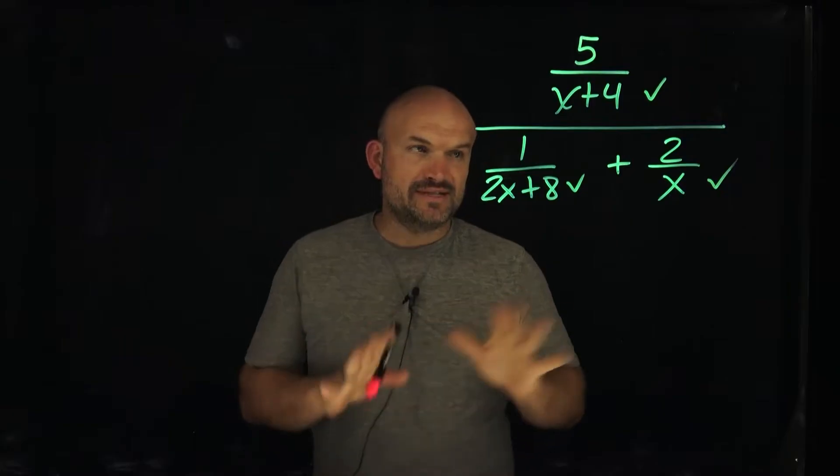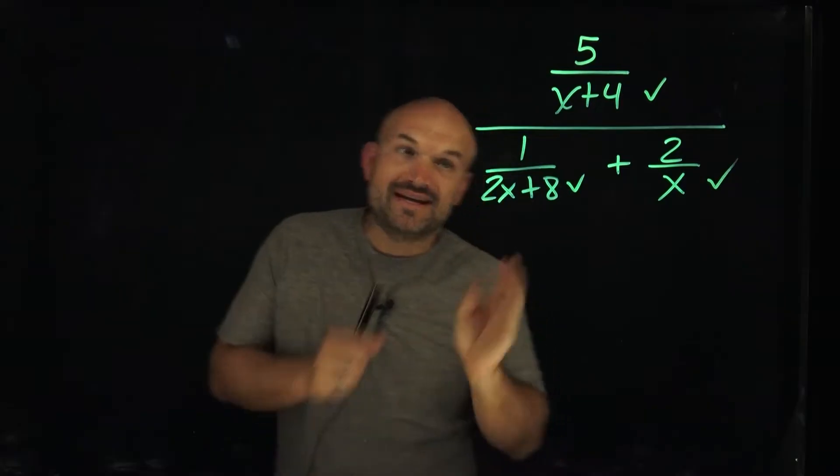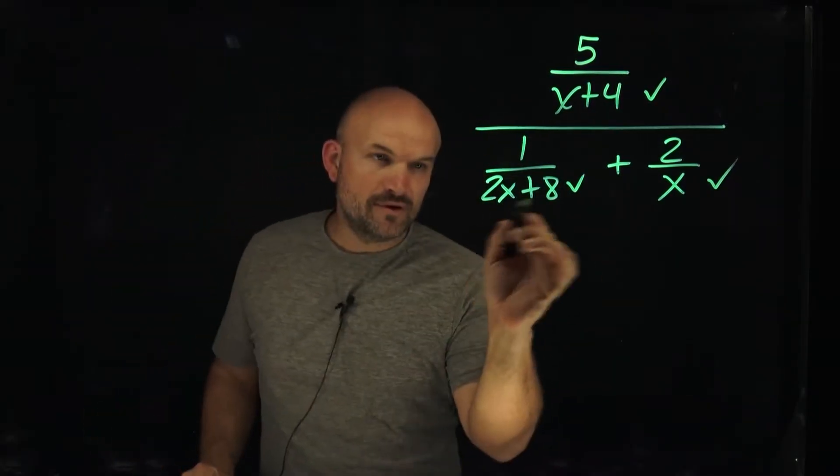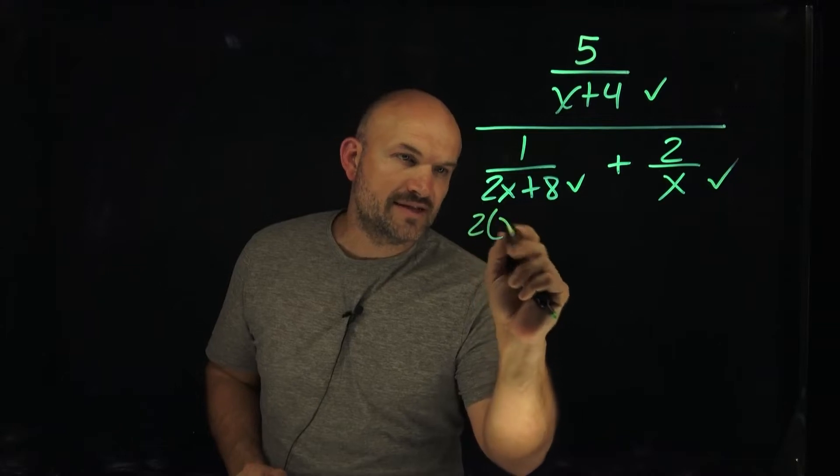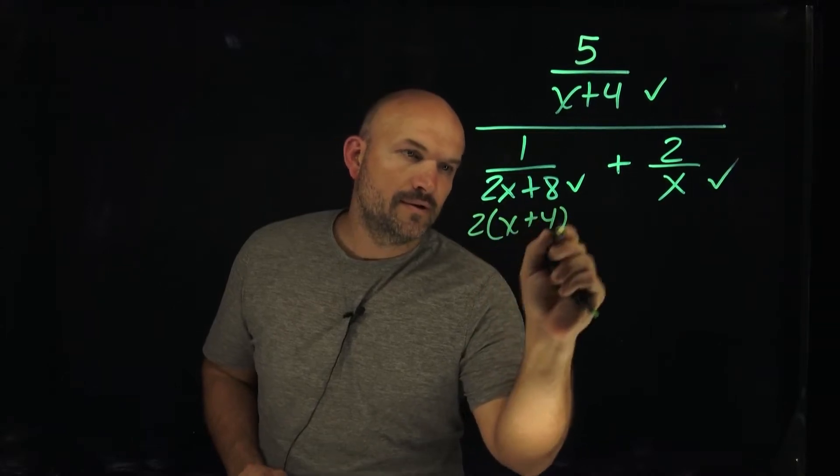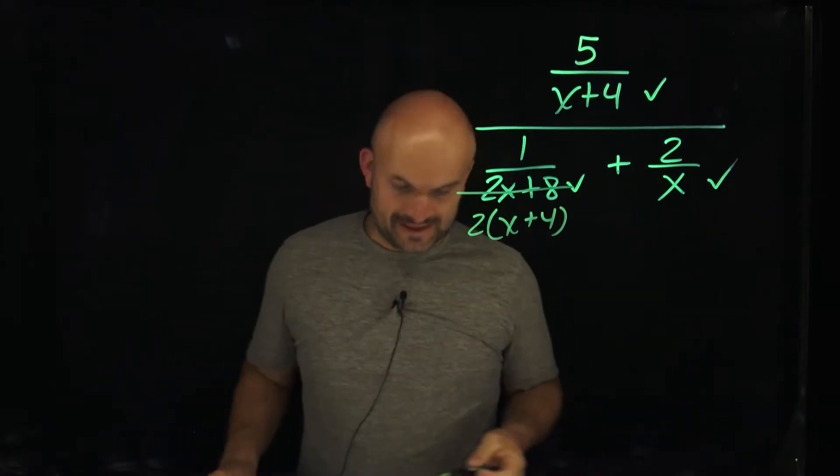So now what we need to do is say, which of these denominators can I simplify? x plus 4, can't really do anything. Over here, though, I know I can factor out a 2. So what I'm going to do is simply below it, I'm just going to factor out the 2, and that's going to be an x plus 4. Now I'm just going to put a line through there. And over here, I have an x. I can't do anything from there.